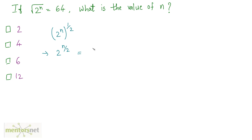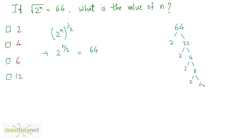On the right hand side we have 64. What power of 2 is 64? Let us write 64 as a product of its prime factors. Dividing 64 by 2 gives 32, then 16, then 8, then 4, then 2 times 2 is 4. Counting the factors, we get 2 raised to 6 equals 64.